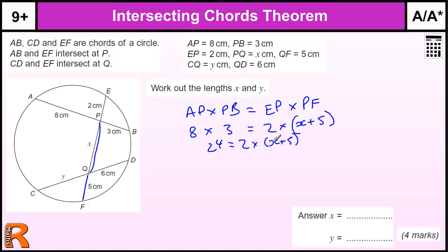Now we could work that out by just guessing that 7 plus 5 is 12 times 2 is 24, or we could divide by 2 to get 12 equals x plus 5, which tells us that x equals 7. For 2 marks we get the 7.